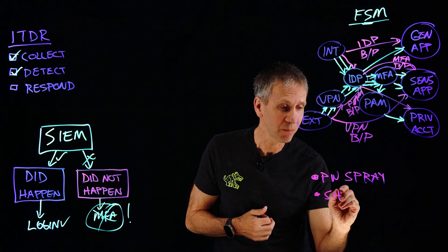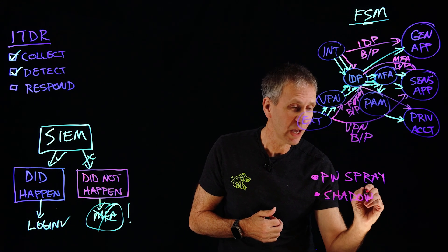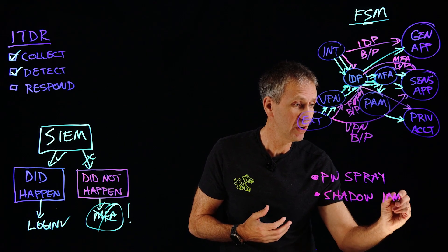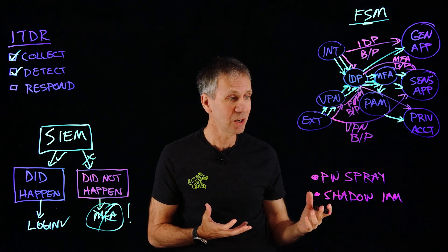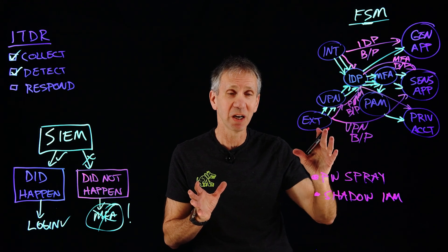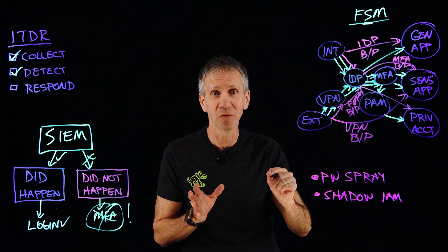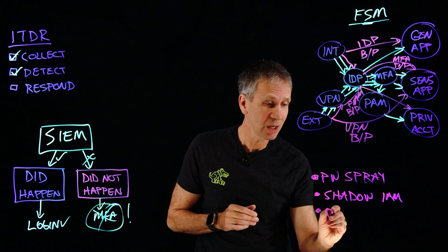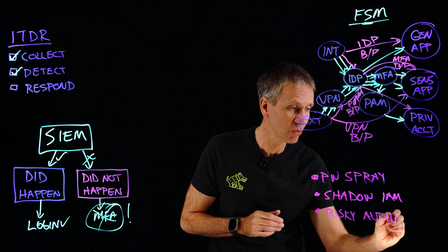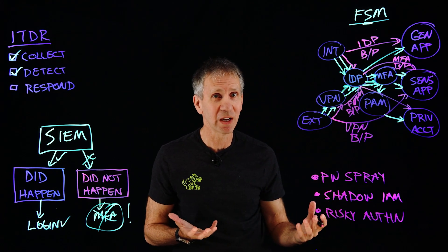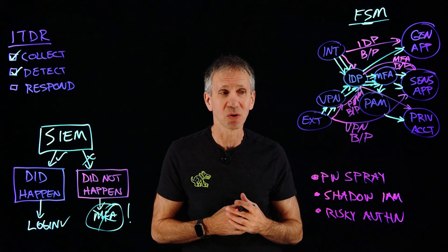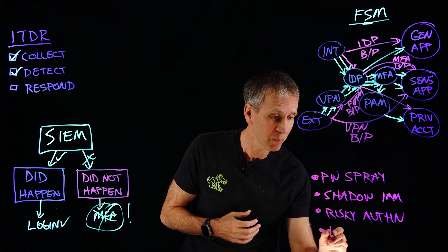Another example is shadow IAM — identity sources or directories the IT organization didn't approve, configure, or align to policy. An ITDR tool can discover unauthorized directories in your environment and ensure they're locked down. There may also be risky authentication protocols — older protocols with unpatched vulnerabilities — that someone brought up, unknowingly exposing the organization.